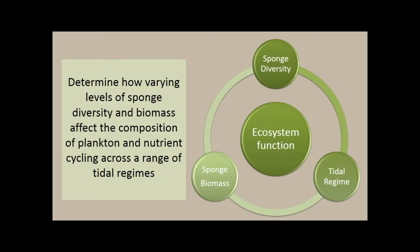One of the chapters in my dissertation focused on determining how varying levels of sponge diversity, density, and local environmental conditions, especially current velocity, affects ecosystem function. So we're not focusing on one small little sponge in an aquarium. We're focusing on communities of different biomasses in different tidal regimes to see how they are generally affecting the environment around them.